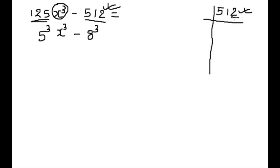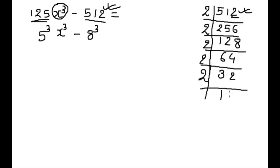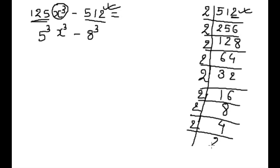So how to find that 512 is cube of 8? We start prime factorization. 512 is divisible by 2 because the last digit is 2. Dividing: 512 divided by 2 is 256, divided by 2 is 128, divided by 2 is 64, divided by 2 is 32, divided by 2 is 16, divided by 2 is 8, divided by 2 is 4, divided by 2 is 2, divided by 2 is 1.